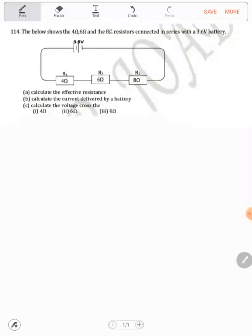The question says: the figure shows 4Ω, 6Ω, and 8Ω resistors connected in series with a 3.6 volt battery. So we have these all arranged in series.